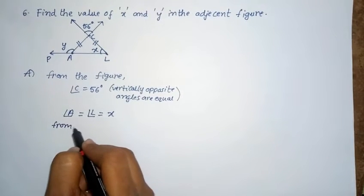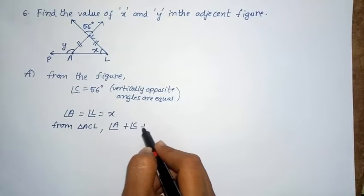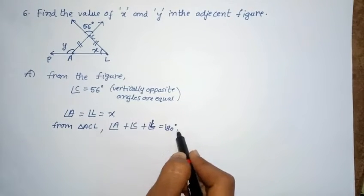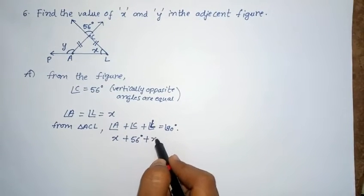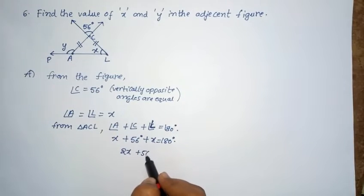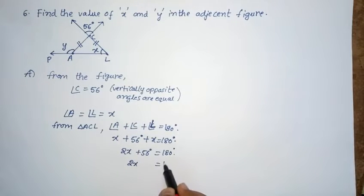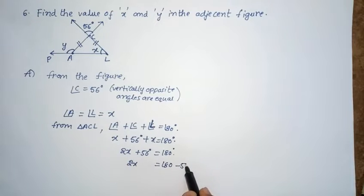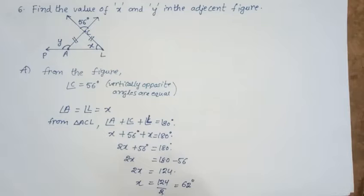From triangle ACL, angle A plus angle C plus angle L equals 180 degrees. So X plus 56 degrees plus X equals 180 degrees. 2X plus 56 equals 180. So 2X equals 180 minus 56, which equals 124. Therefore X equals 124 divided by 2, which gives 62 degrees. So angle X equals 62 degrees.